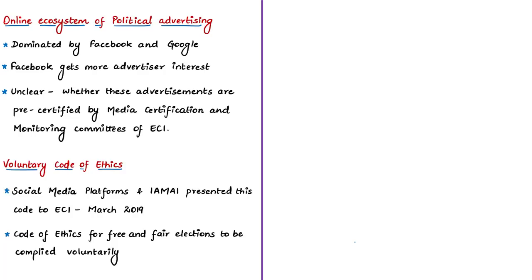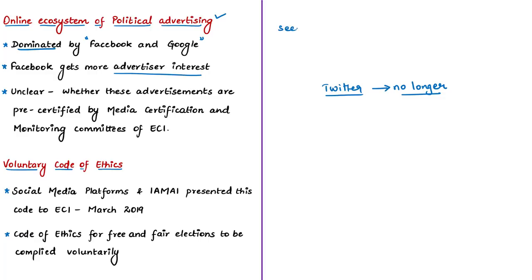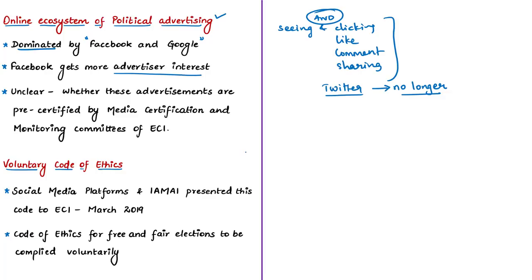Twitter CEO Jack Dorsey said his company would not accept political advertisements hereafter. The online ecosystem of political advertising is dominated by two intermediaries — Facebook and Google — with Facebook getting much more attention from advertisers due to the level of targeted marketing available and the possibility of engagement through comments, likes, or sharing of posts. When we say engagement it includes seeing an advertisement and choosing to click, putting a like, commenting, or sharing.